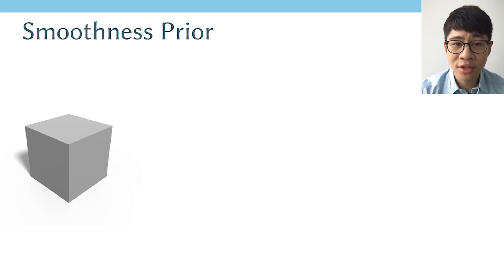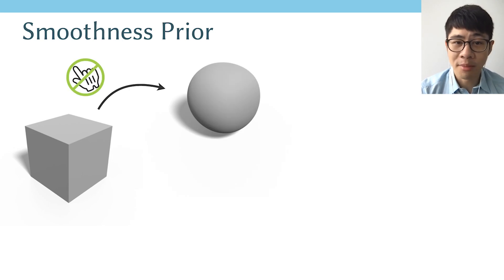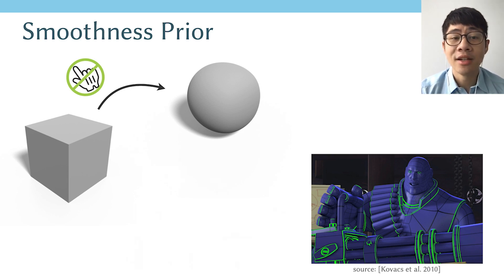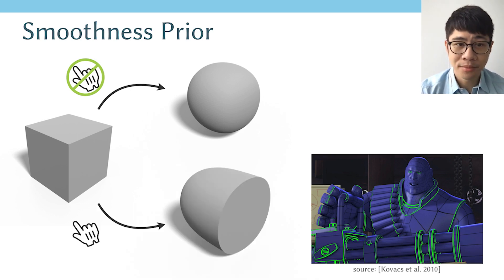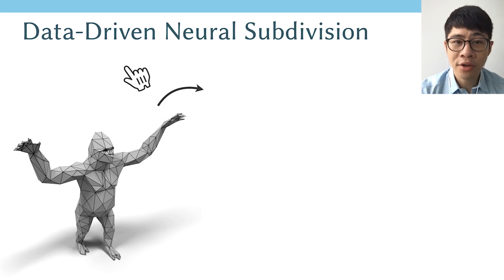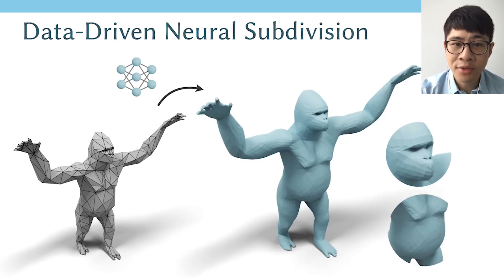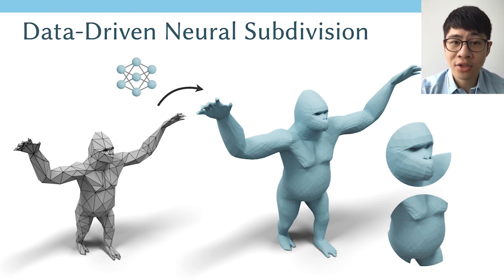Classic subdivision often assumes the underlying geometry to be smooth. Therefore, without a lot of manual effort, we can easily create a smooth shape. But if our target geometry is a complicated one with a lot of sharp creases, then a lot of manual effort is required. The motivation of our work is to replace such manual effort with a machine learning model. We want the network to learn how to subdivide the mesh differently for different parts, as shown in this gorilla mesh example.